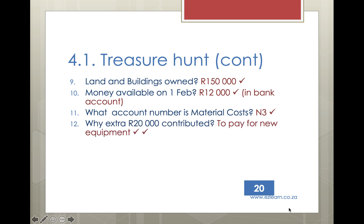Question 12: Why do you think Emma contributed an extra R20,000 Rand this month? She would have had to contribute the extra cash so that the business was able to buy the equipment. You would need to analyse the records more carefully and notice that R15,000 Rand was spent on equipment during February, and therefore the money needed to come from somewhere, as not enough was earned from sales or current income that month.